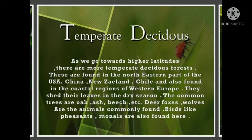Fourth, temperate deciduous forests. As we go towards higher latitudes, there are more temperate deciduous forests. These are found in the northeastern part of the USA, China, New Zealand, Thailand and in the coastal regions of western Europe. They shed their leaves in the dry season. Common trees are oak, ash, beech, etc. Deer, foxes and wolves are the animals commonly found here. Birds like pheasant and monal are also found here.